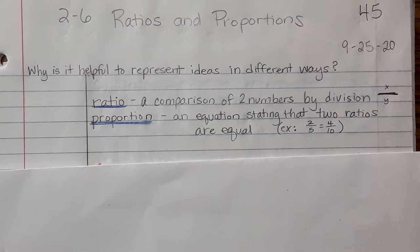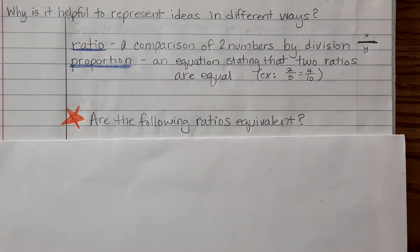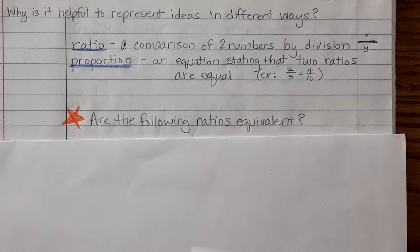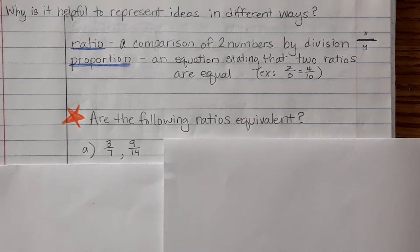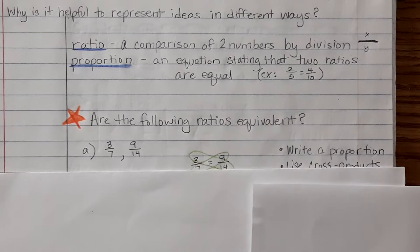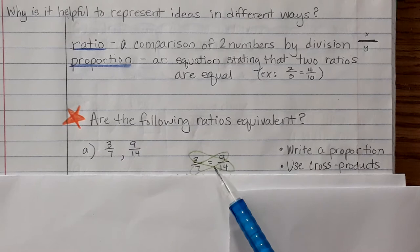In this first section of notes we're going to learn about how to tell if the ratios are equivalent, if they are equal. So in this example I have two ratios. I want to know are these two ratios equal? Are they equivalent? So the first thing you want to do is write a proportion making them equal. Then use cross products.